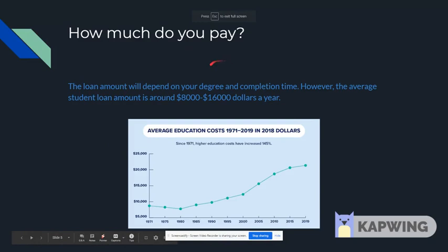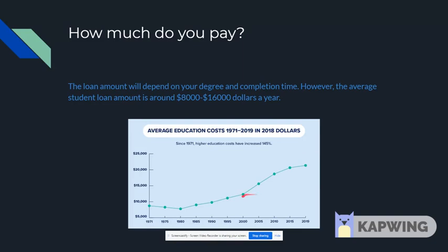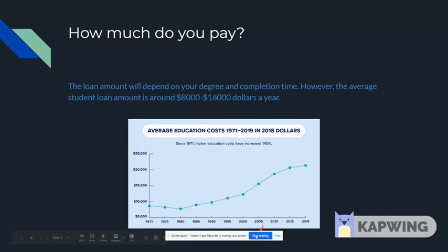How much do you pay? The loan amount will depend on your degree and completion time. However, the average student loan amount is around $8,000 to $16,000 a year. But as you can all see from the graph, the average cost of education continues to increase, so you can easily believe this number will grow.